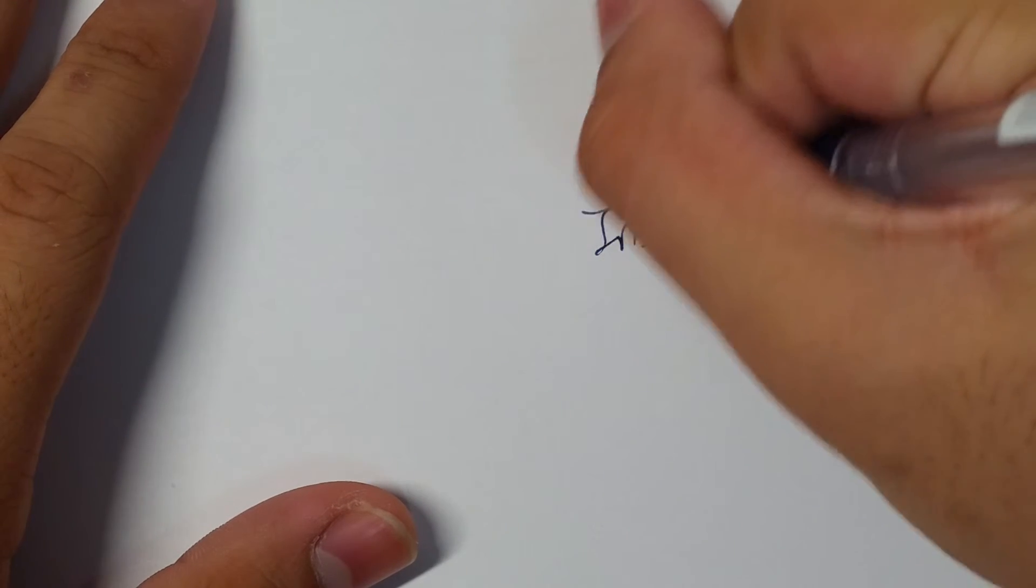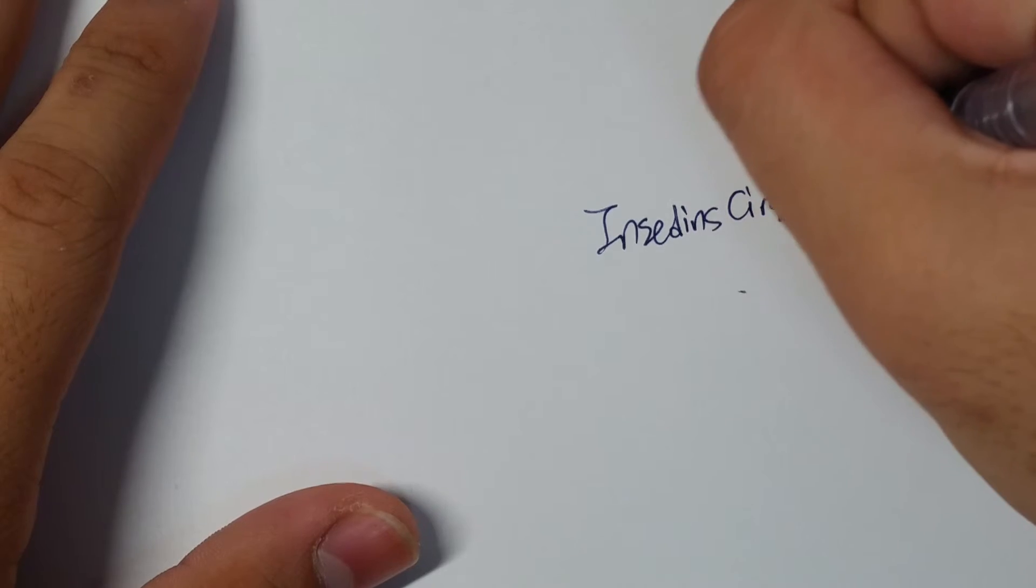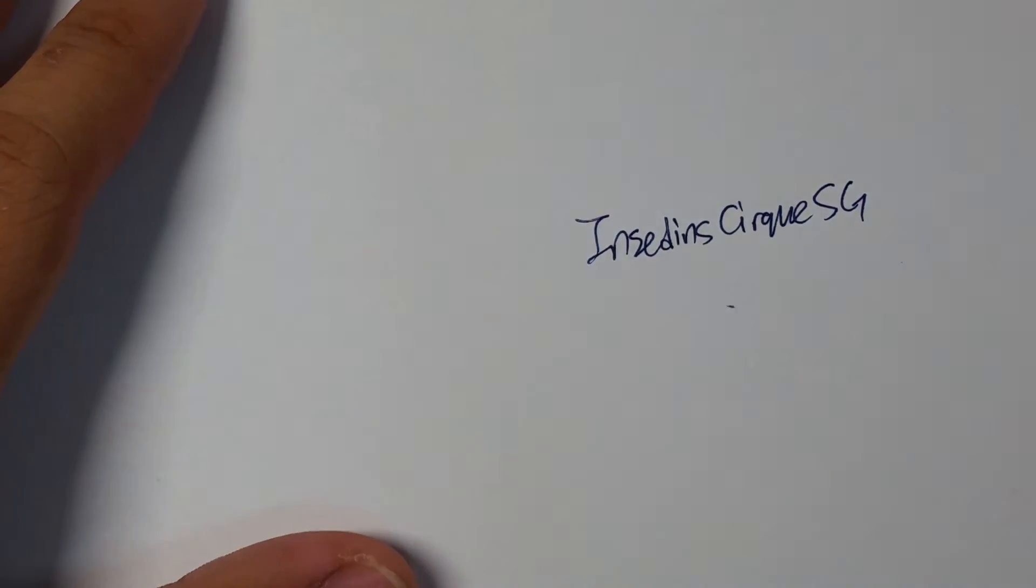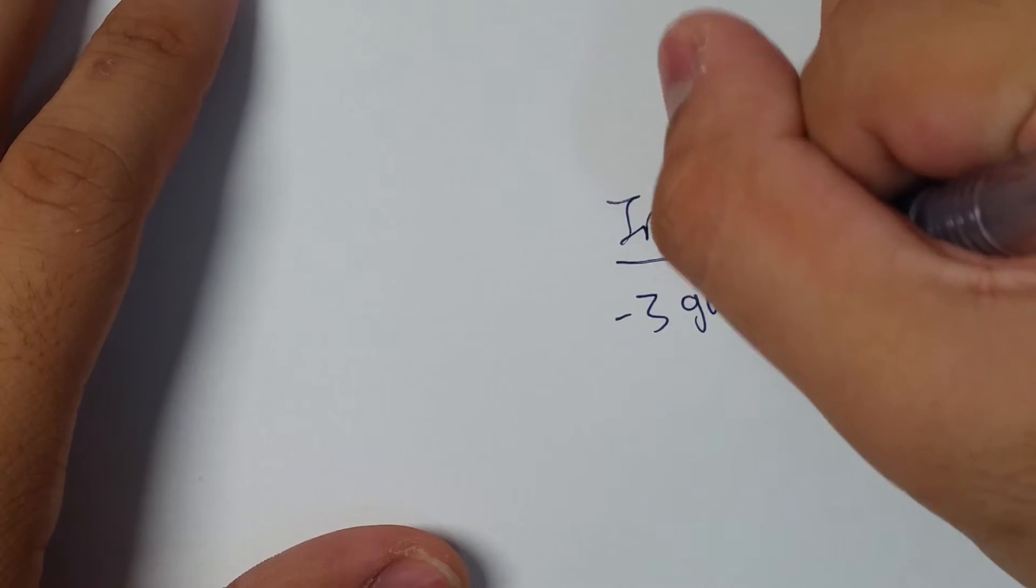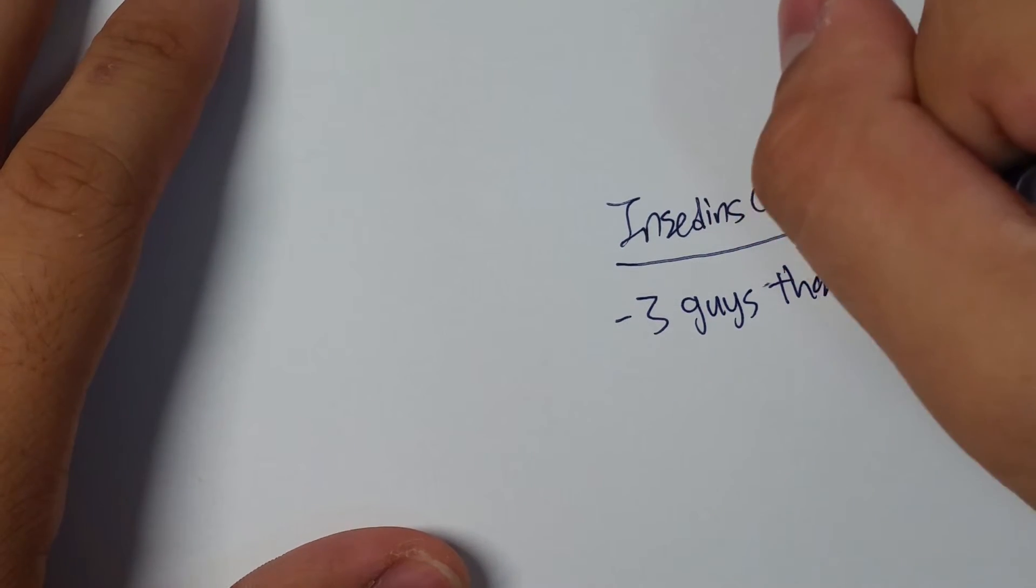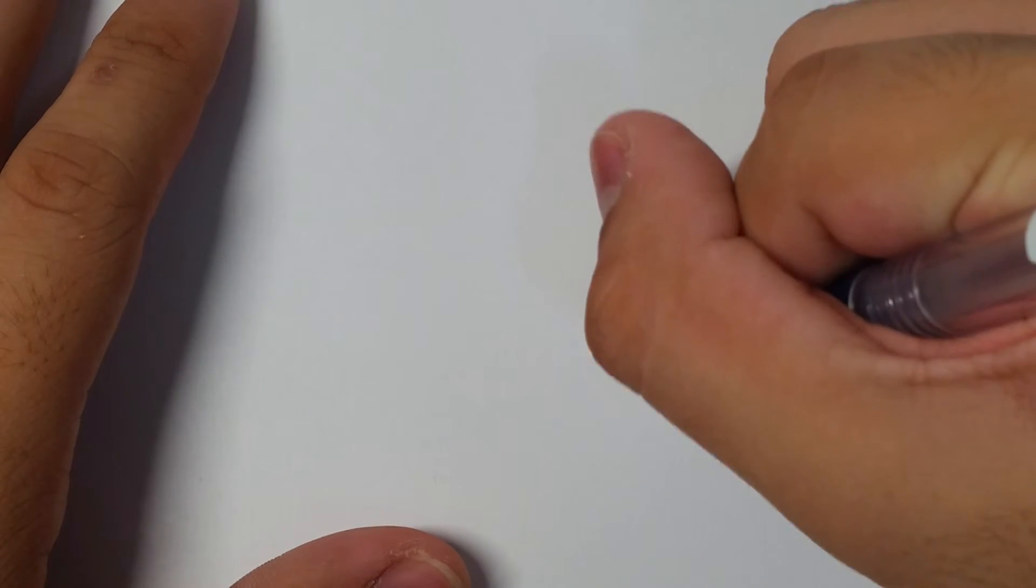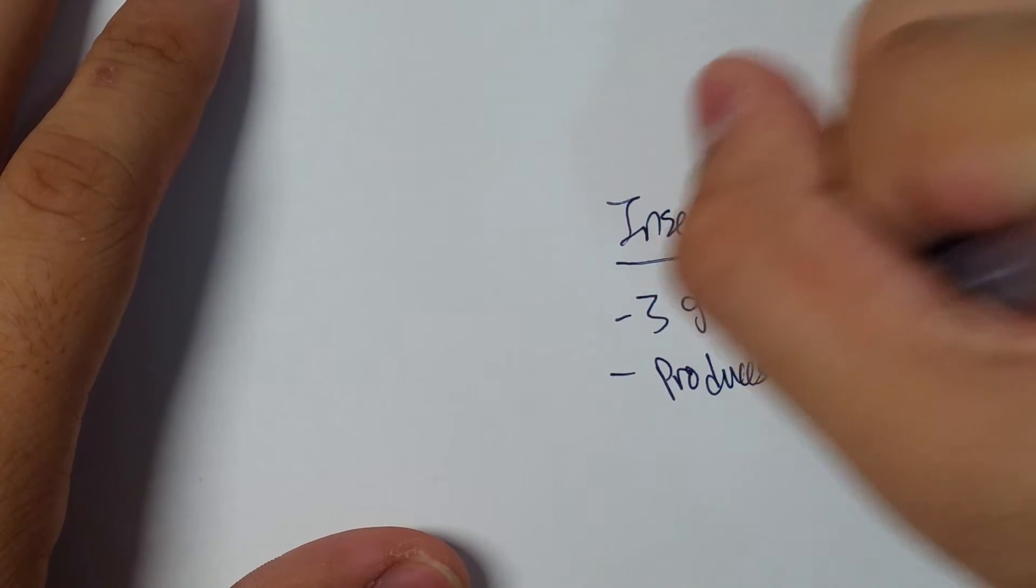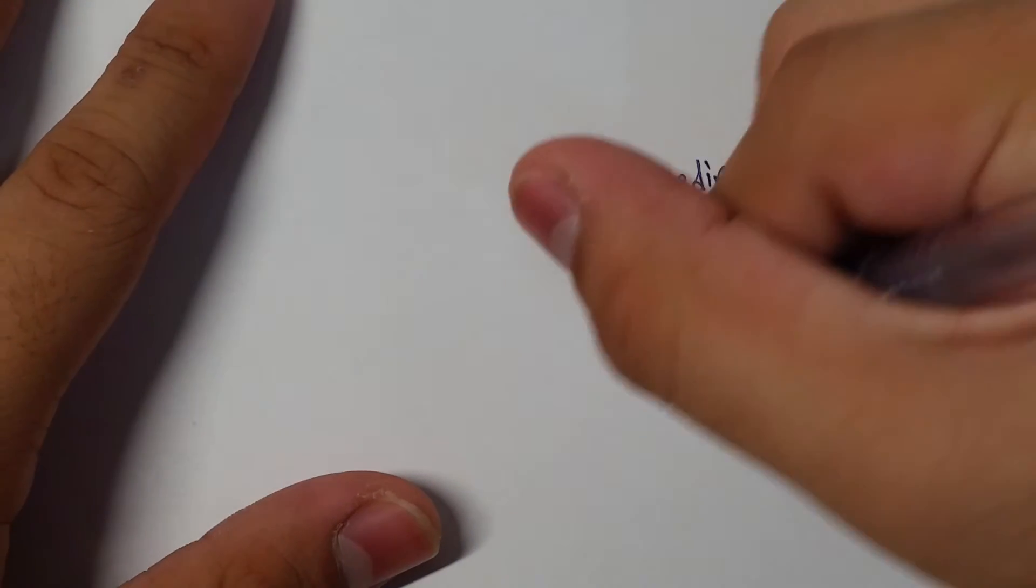So to explain what Incident Cirque is—this is our channel name. We are three guys that just like to have fun, produce videos, and like to play Vanguard.